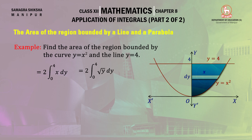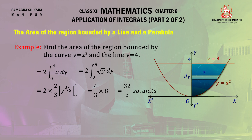From y equal to x square, we express x in terms of y as x equal to root over y, taking the positive value since we are in the first quadrant. Integrating root over y gives 2 by 3 times y to the power 3 by 2, evaluated from 0 to 4. Applying the fundamental theorem of integral calculus, the area becomes 32 by 3 square units.